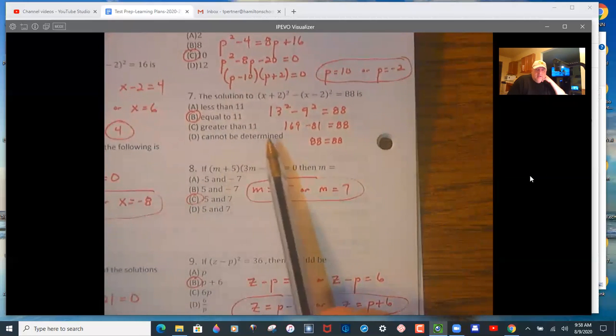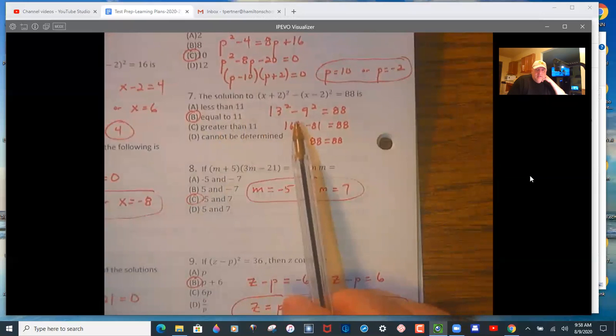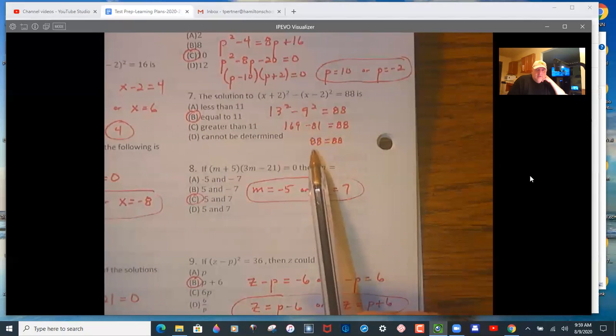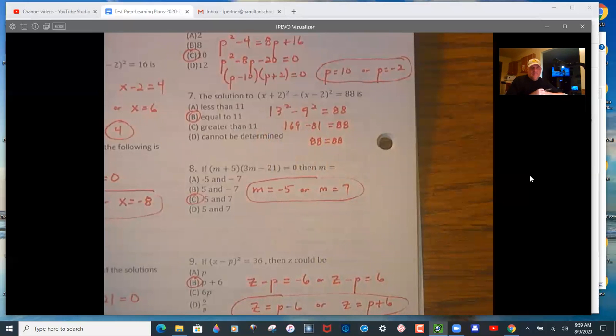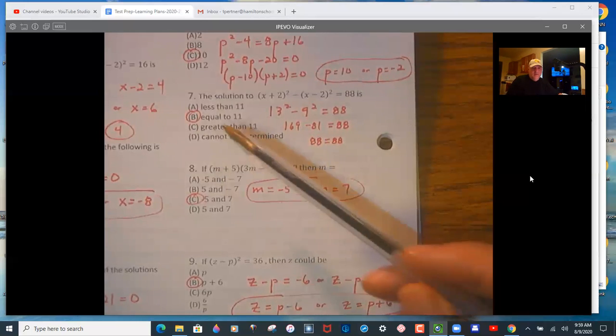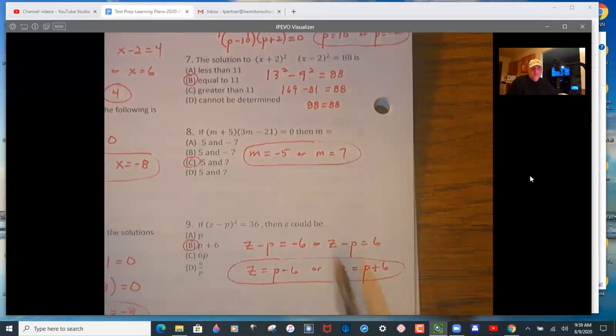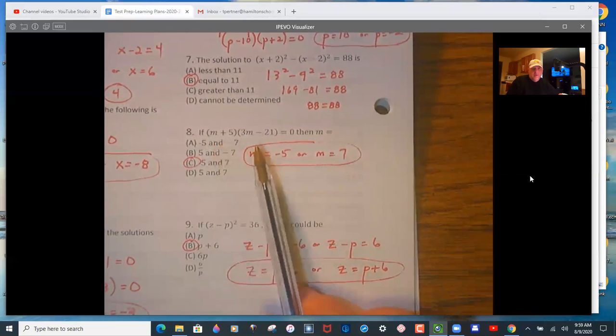Same idea here. Here I would substitute in 11, and then you get 88. So 11 does work. If it didn't, then you'd have to try numbers greater than 11 and smaller than 11. Okay, m equals negative 5 or 7.